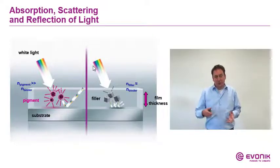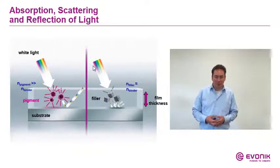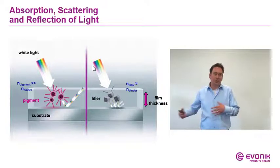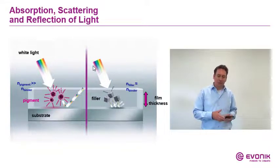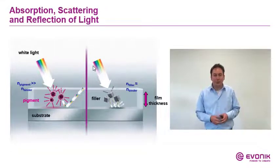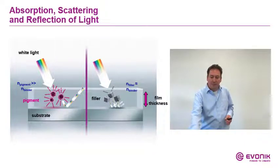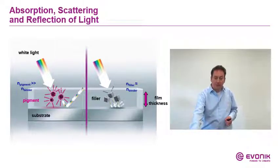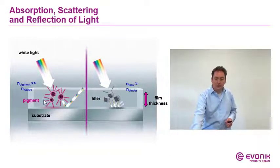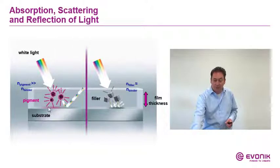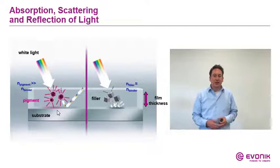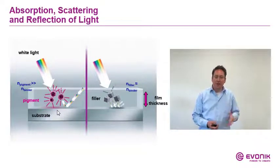When we talk about pigments, we also have to talk about hiding power, because we not only want color — we also want hiding power from pigment particles. That works with the refractive index. Pigment particles have a very high refractive index and so they can scatter the light in all directions. When white light hits the pigment particle, it is scattered in all directions and cannot reach the substrate. The substrate is hidden and we have very high hiding power.